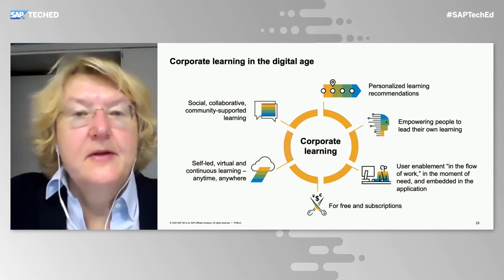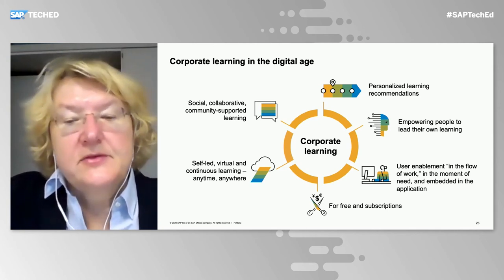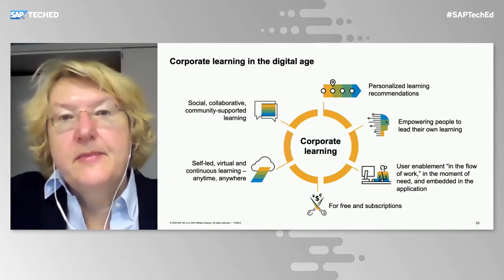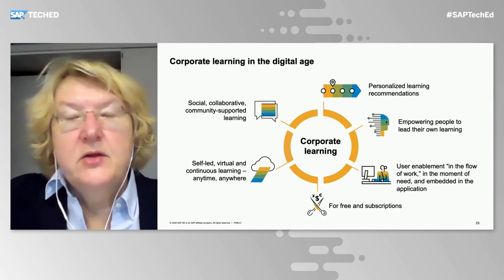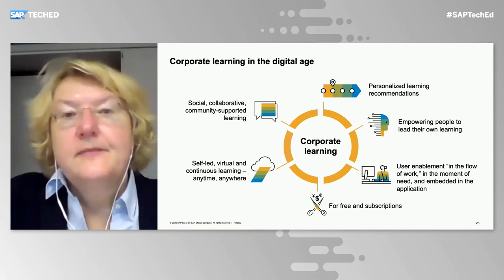The transformation success is three times higher when organizations have invested in the right amount of skills. When we look at the perspective of learning, how has it evolved in the digital age? COVID-19 has fueled many of these trends. Learning has evolved toward self-led, virtual, and continuous learning — anytime and anywhere. It's social and collaborative — people want to exchange with each other, ask questions, get answers, and have discussions. It's also about personalization: what do I want to learn, what's the recommendation, what must I learn? It's about empowering people to lead their own learning.